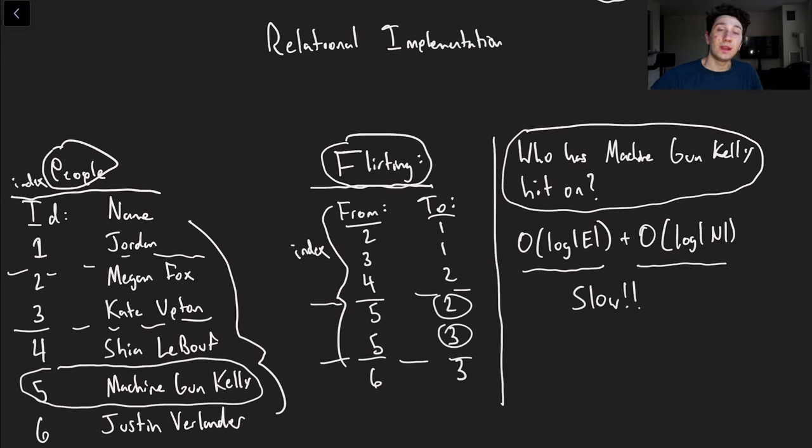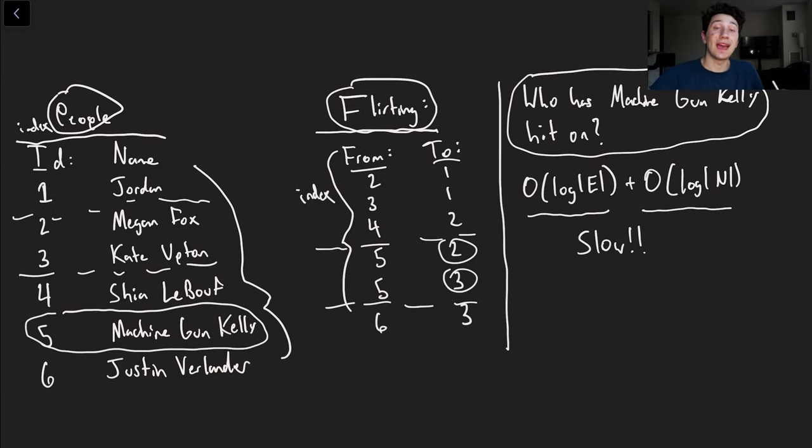For starters in order to find the primary keys of who we flirted with that is a logarithmic operation relative to the number of edges in our graph, and to actually go ahead and then take those primary keys and get the people from them that is a logarithmic operation relative to the number of people or nodes in our graph. And so as a result of that that is going to be pretty slow. When we think of a graph typically when we have an edge we can just jump to the other node right, we can do it in basically constant time complexity.